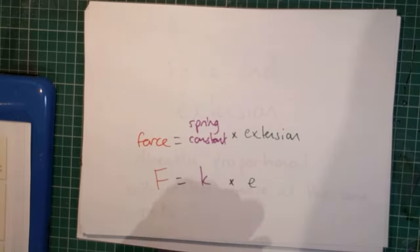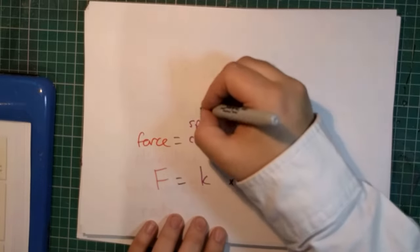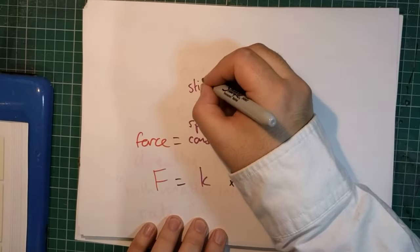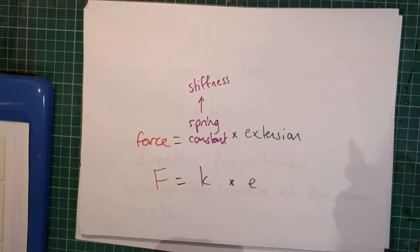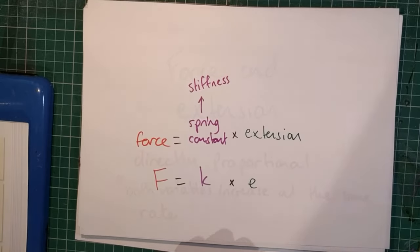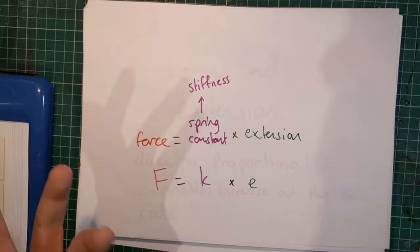Now, the spring constant can also be described as the stiffness of the spring, how difficult it is or how much force is required to make it extend a certain distance or for a certain distance, what force is required.